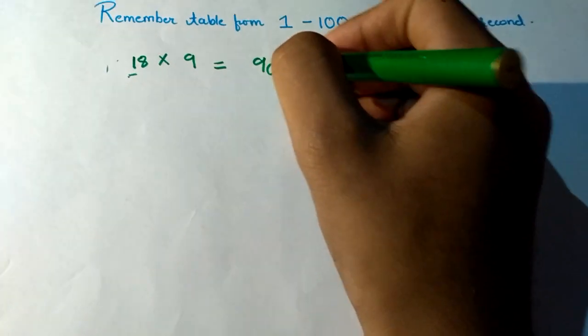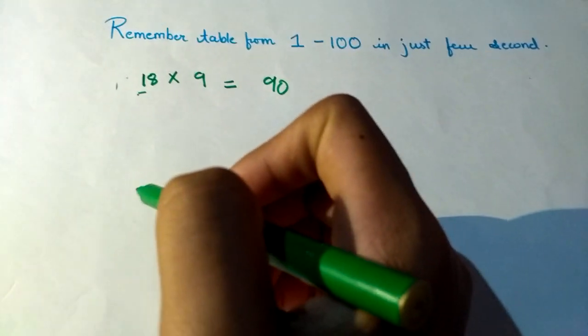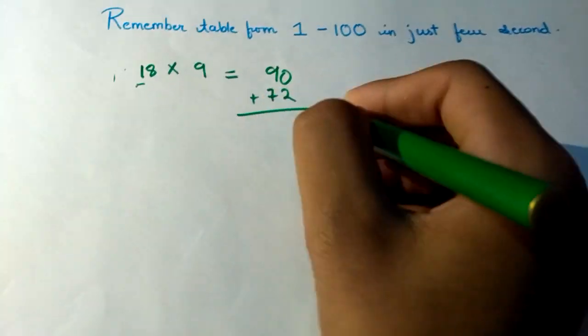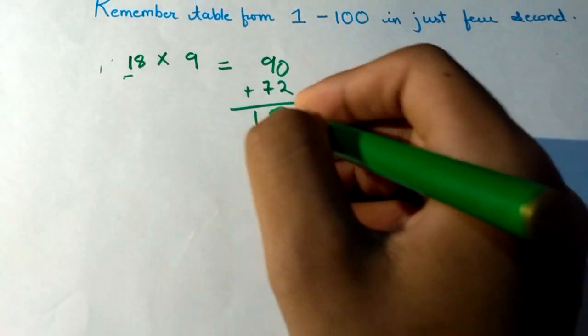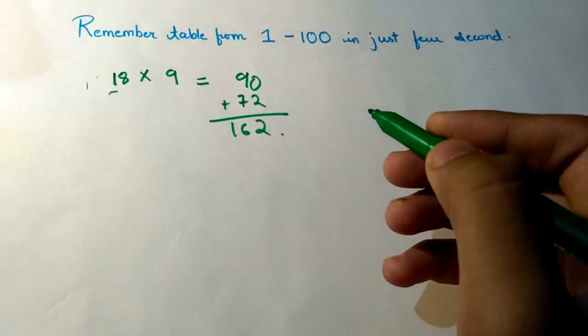Add one zero on the right hand side. Now you multiply 8 × 9, that is 72, and add 72 with 90. So now our answer is 162. So 18 × 9 = 162.